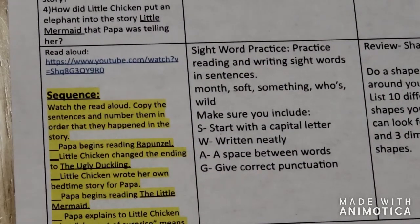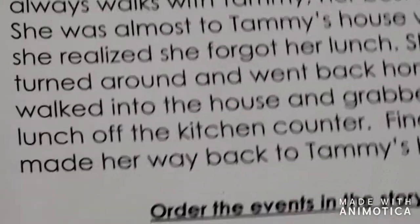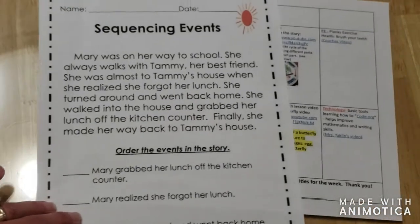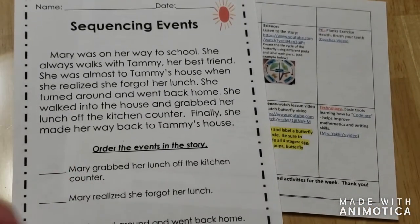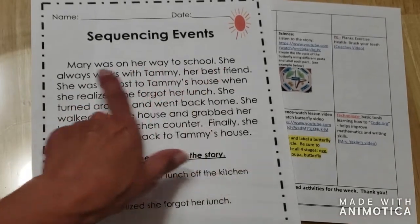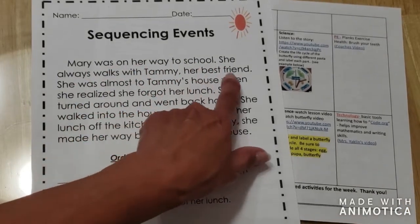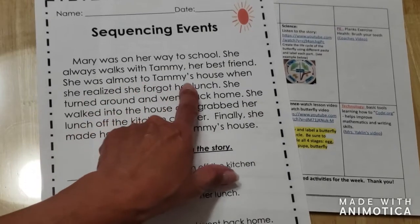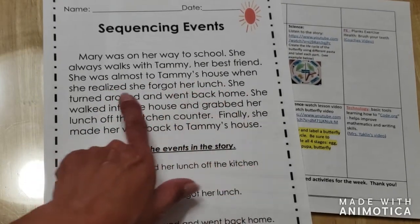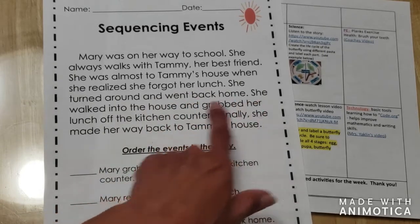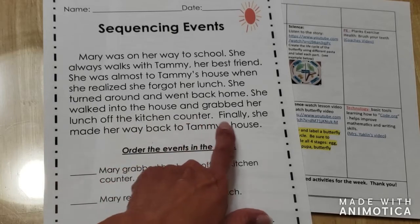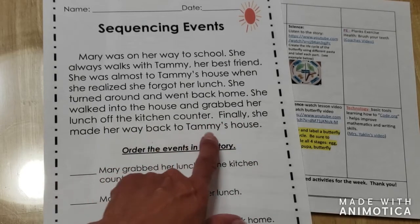When we have a story, I'm going to give you an example. We're going to do this one together — I'm going to show you this sequencing of events. So I'm going to read the story: Mary was on her way to school. She always walks with Tammy, her best friend. She was almost to Tammy's house when she realized she forgot her lunch. She turned around and went back home. She walked into the house and grabbed her lunch off the kitchen counter. Finally, she made her way back to Tammy's house.